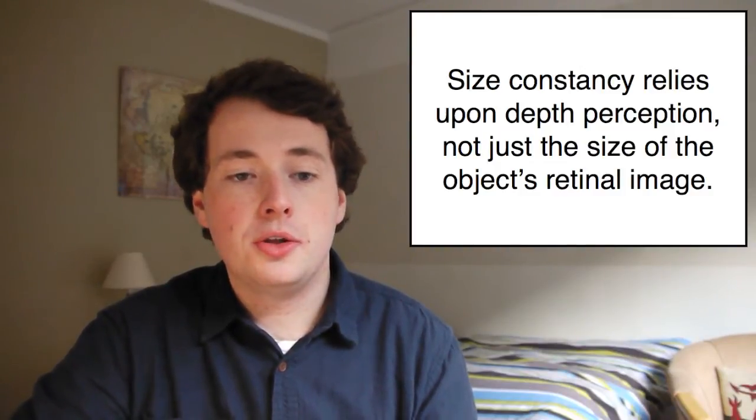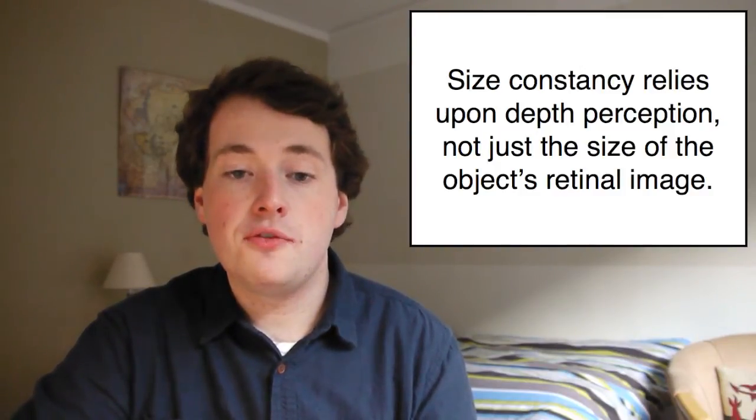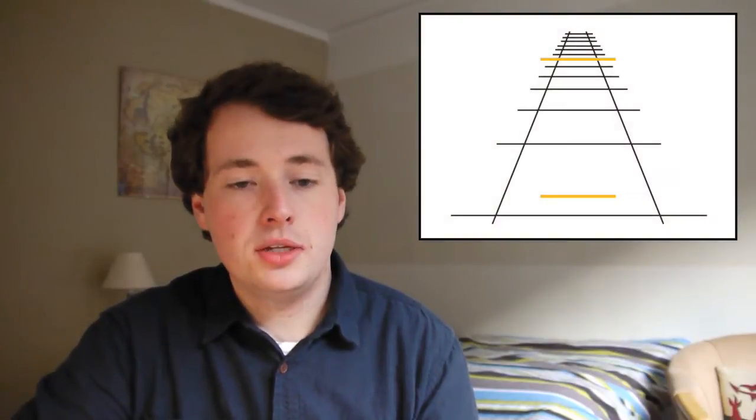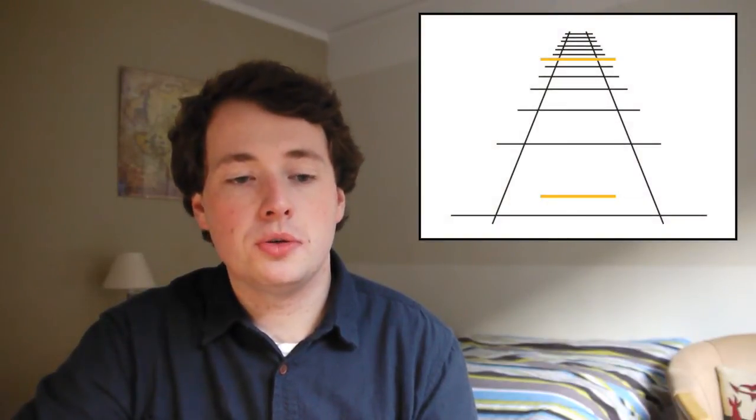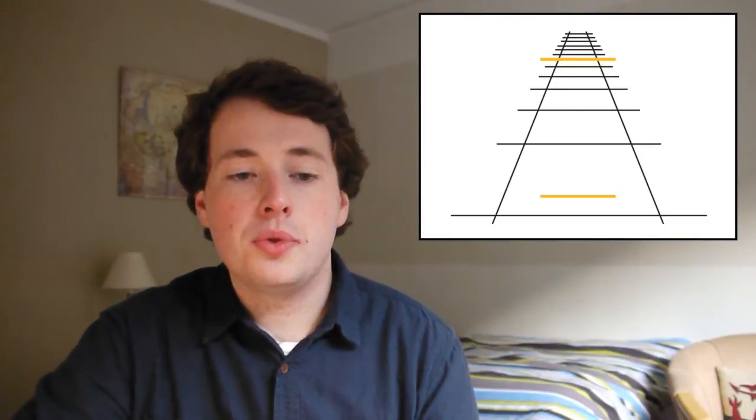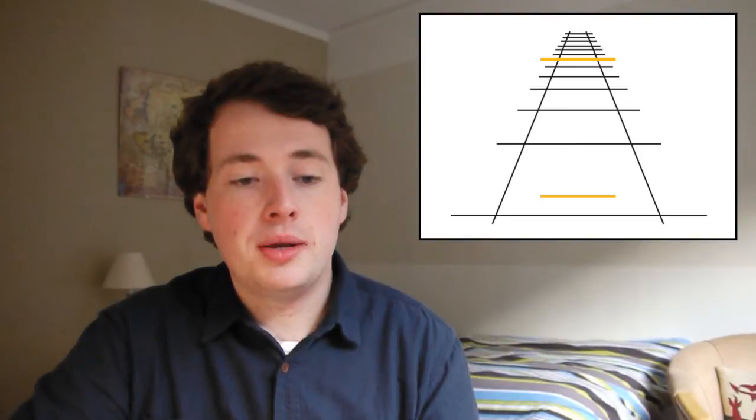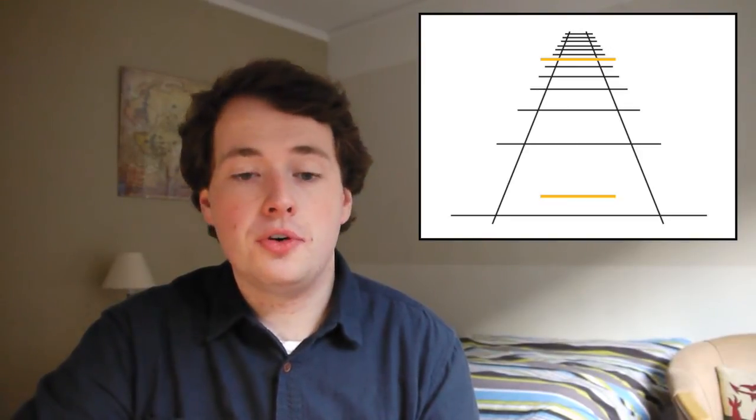The brain employs the heuristic that objects close to the horizon of a scene are further away from the observer. This can be illustrated in visual illusions such as the Ponzo illusion, in which two objects of identical length are placed in a scene, and the one that is close to the horizon is scaled up and perceived as larger, as the brain assumes that the object nearer the horizon is further away.